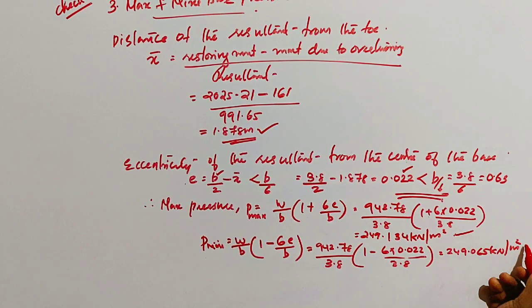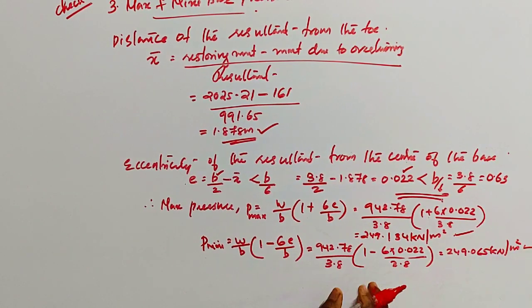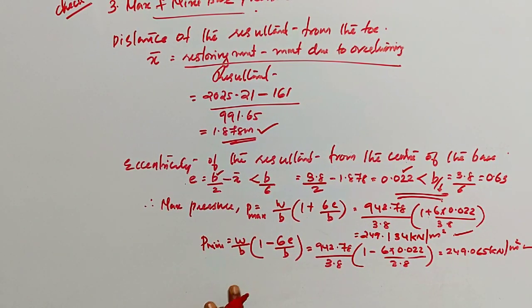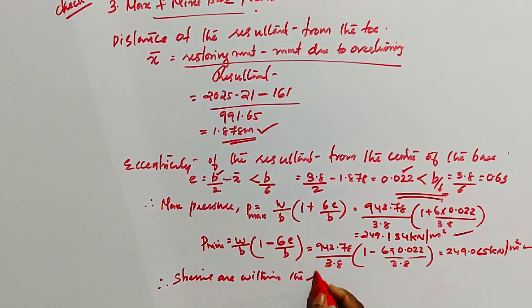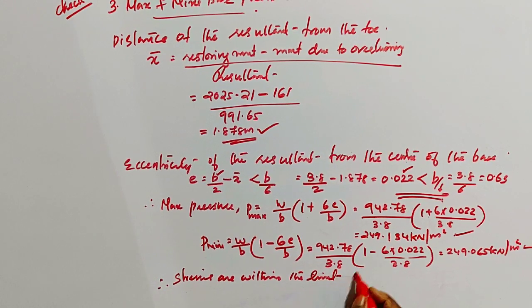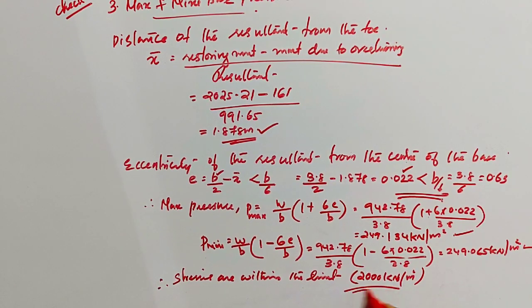The maximum and minimum base pressure should not exceed the permissible stresses, that is the bearing capacity of the supporting media. The stress within the permissible limit, it is concrete, compressive stress for concrete is 2000 kilonewton per meter square.